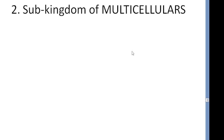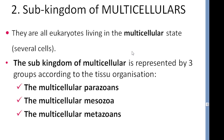Now let's move to the second part of the animal kingdom, which is the multicellular. The multicellular are all eukaryotic living beings that live in the multicellular state — meaning several cells, not a single cell. This sub-kingdom is divided according to tissue organization into three groups.